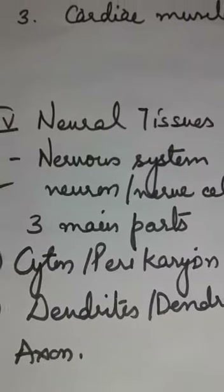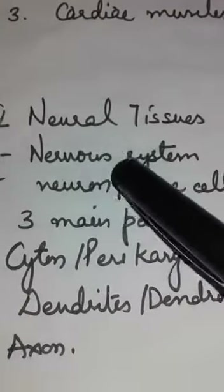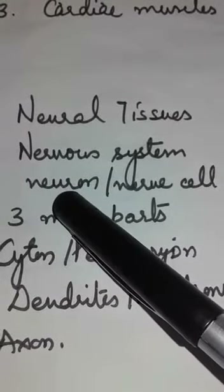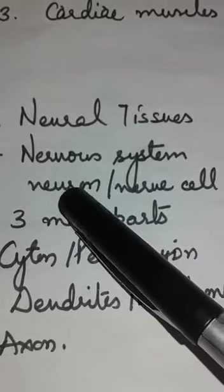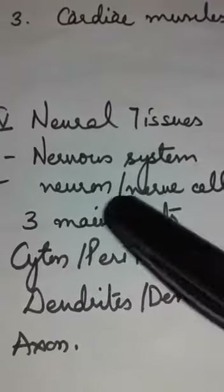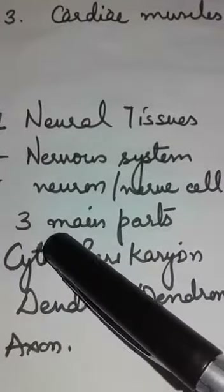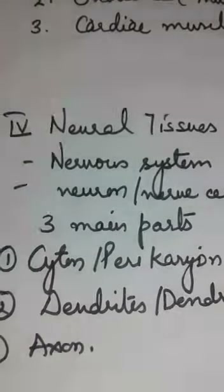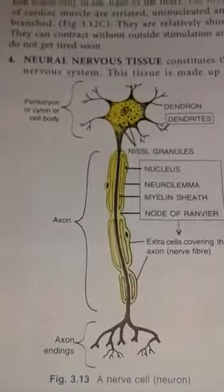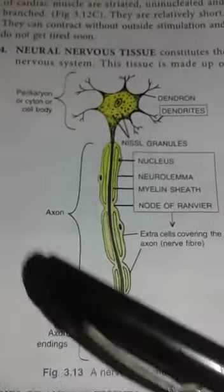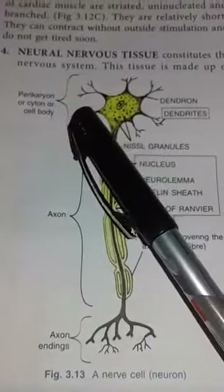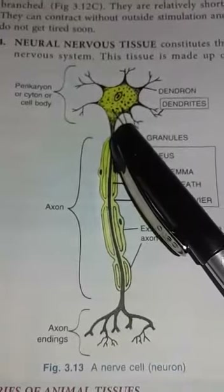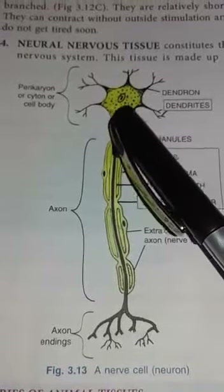The next topic is neural tissue. Neural tissue constitutes the nervous system and is made up of a special cell called a neuron or nerve cell. The neuron contains three main parts: the cell body (cyton), dendrites, and axon. Here you can see the diagram of a nerve cell. The cyton is also known as perikaryon or soma — it is the main body of the nerve cell and contains the nucleus.